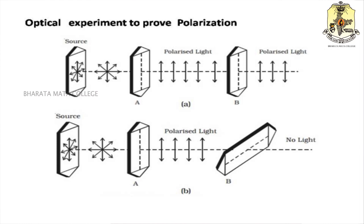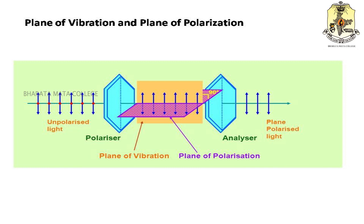The first tourmaline crystal, which converts unpolarized light into polarized light, is known as the polarizer. The second crystal is known as the analyzer. Now let us familiarize ourselves with two terms: the plane of vibration and the plane of polarization. The plane of vibration is the plane containing or parallel to the vibration of the particles. The plane of polarization is the plane perpendicular to the vibration of the particle.